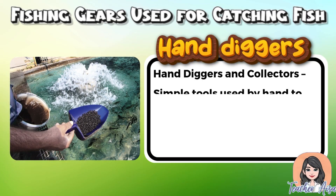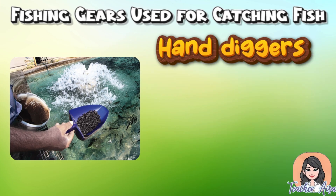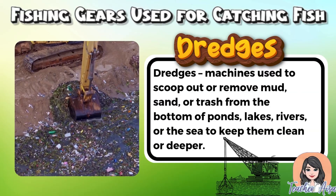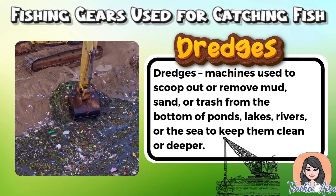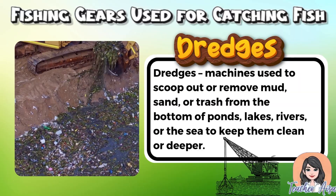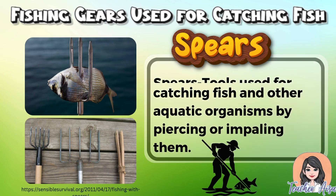Hand diggers and collectors are simple tools used by hand to gather fish, shells, or other small aquatic animals from the water or sea floor, helping fishermen collect aquatic resources easily and efficiently. Dredges are machines used to remove mud, sand, or debris from the bottom of ponds, lakes, rivers, or seas. Spears are pointed tools used to catch fish and other aquatic animals by piercing or impaling them, usually thrown by hand or pushed through the water.